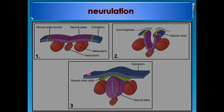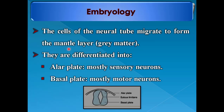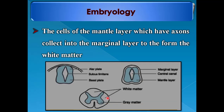The ectoderm will cover the neural tube. The mesoderm will form the future vertebral column, and the notochord will form the gut. The cells of the neural tube migrate to form the mantle layer or gray matter, differentiated into the alar plate, which is mostly sensory neurons, and the basal plate, which is mostly motor neurons, marked by the sulcus limitans. The axons of the mantle layer cells collect into the marginal layer to form the white matter.